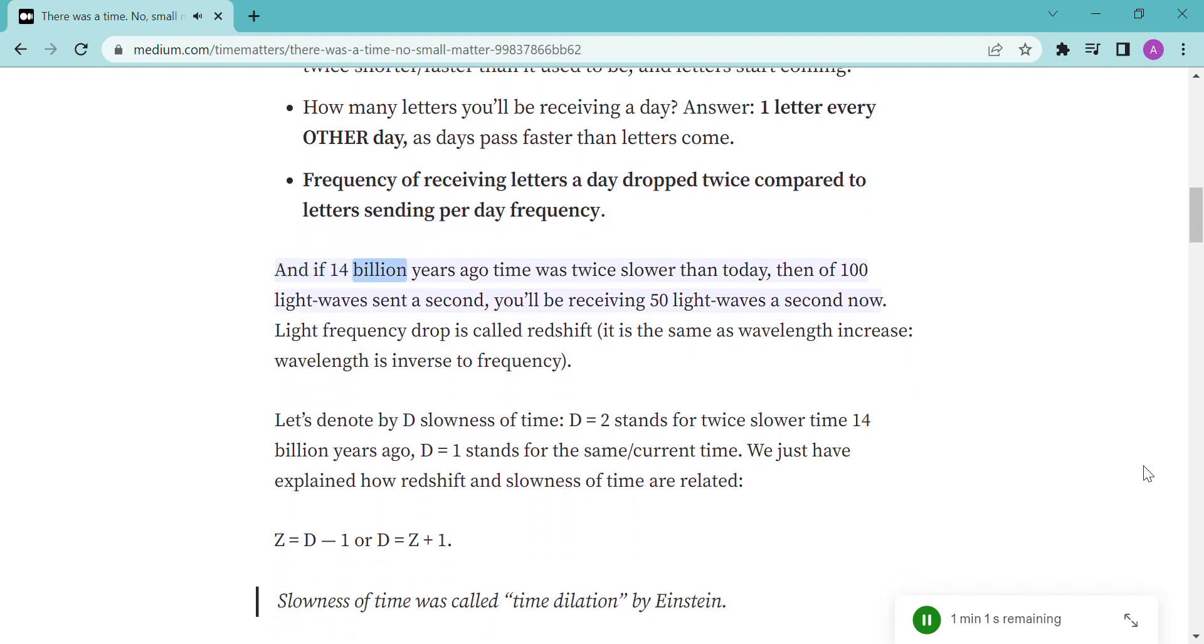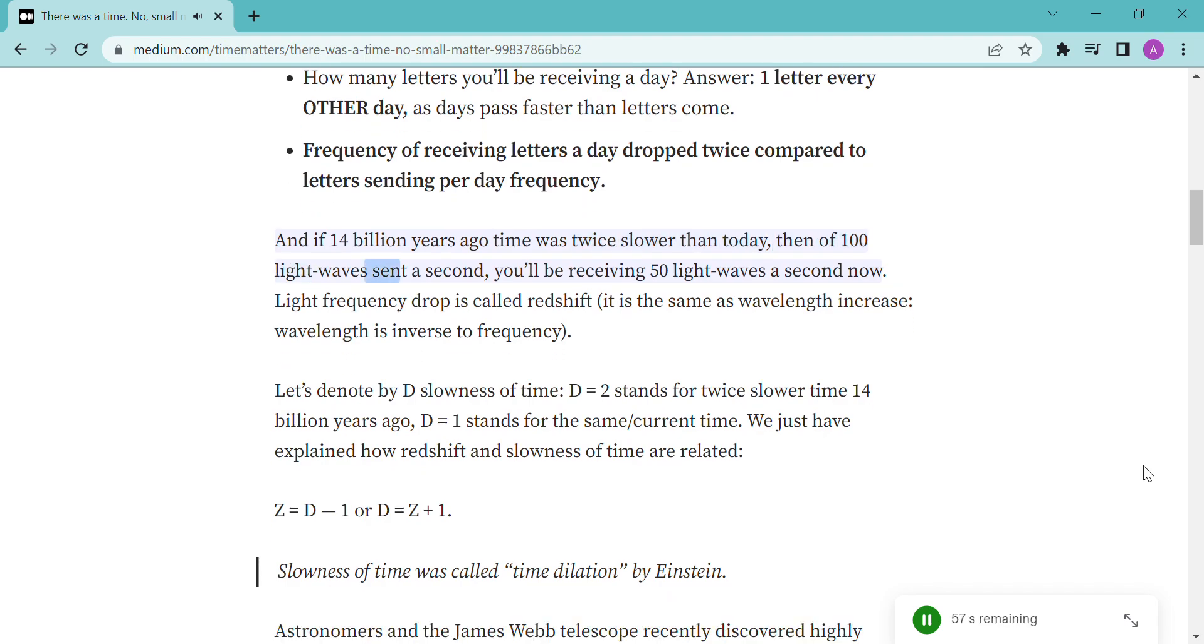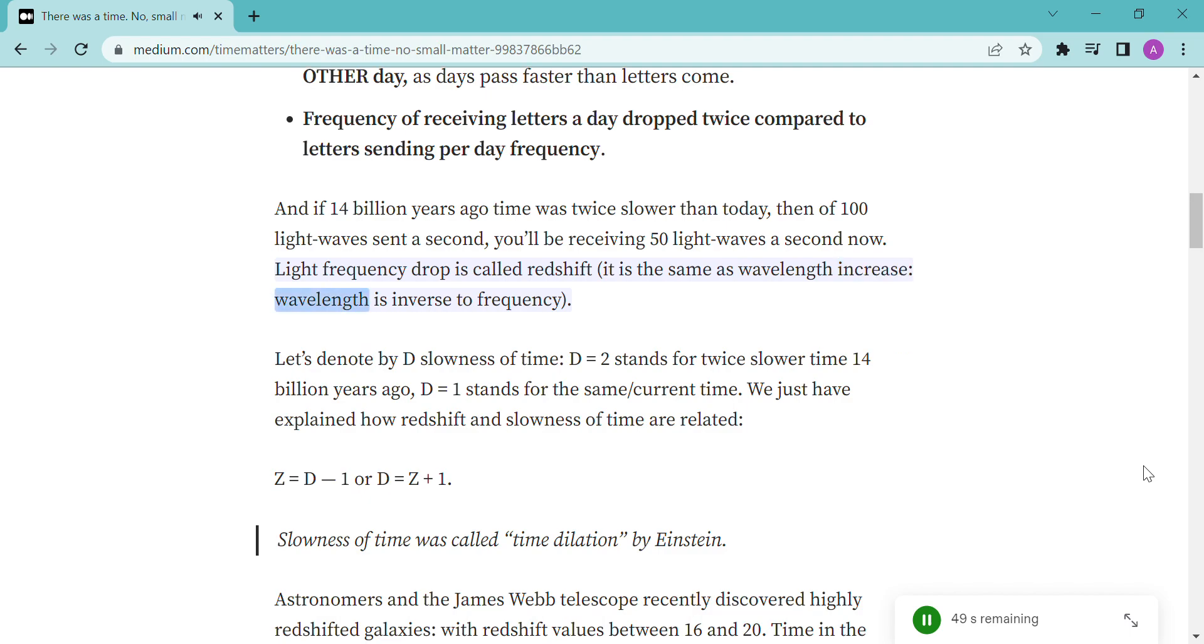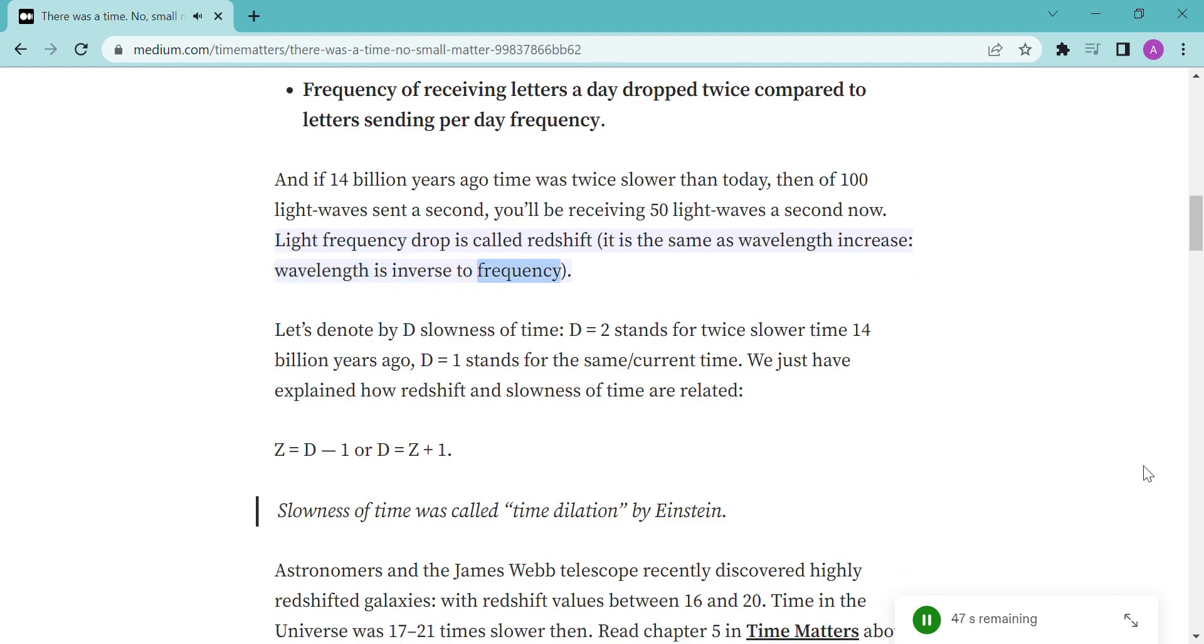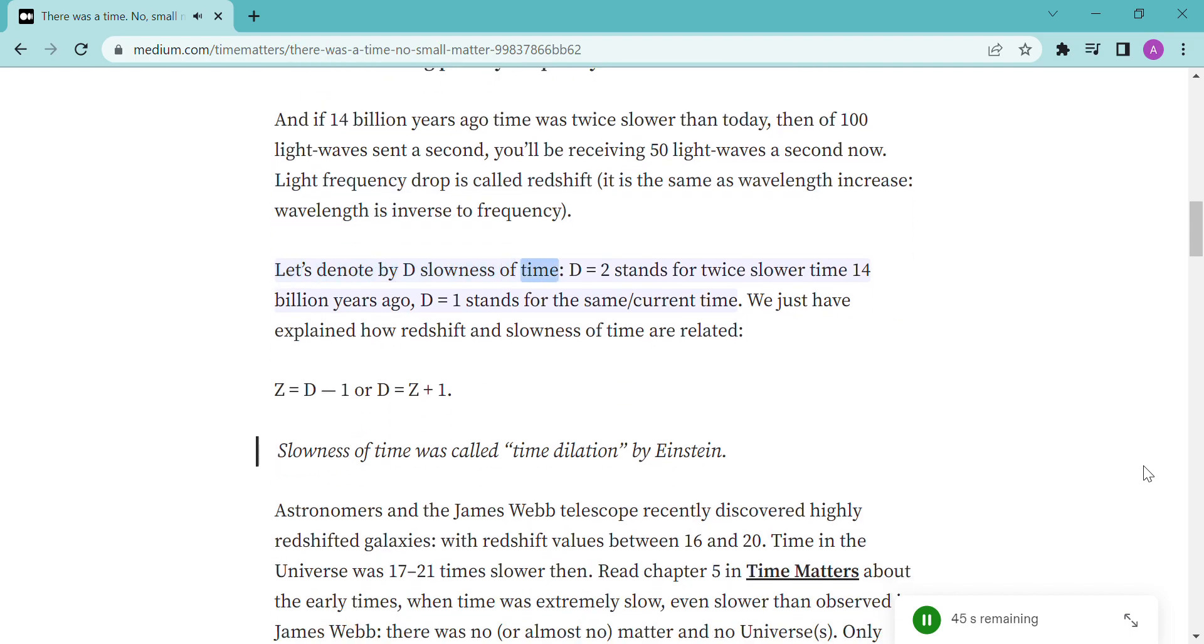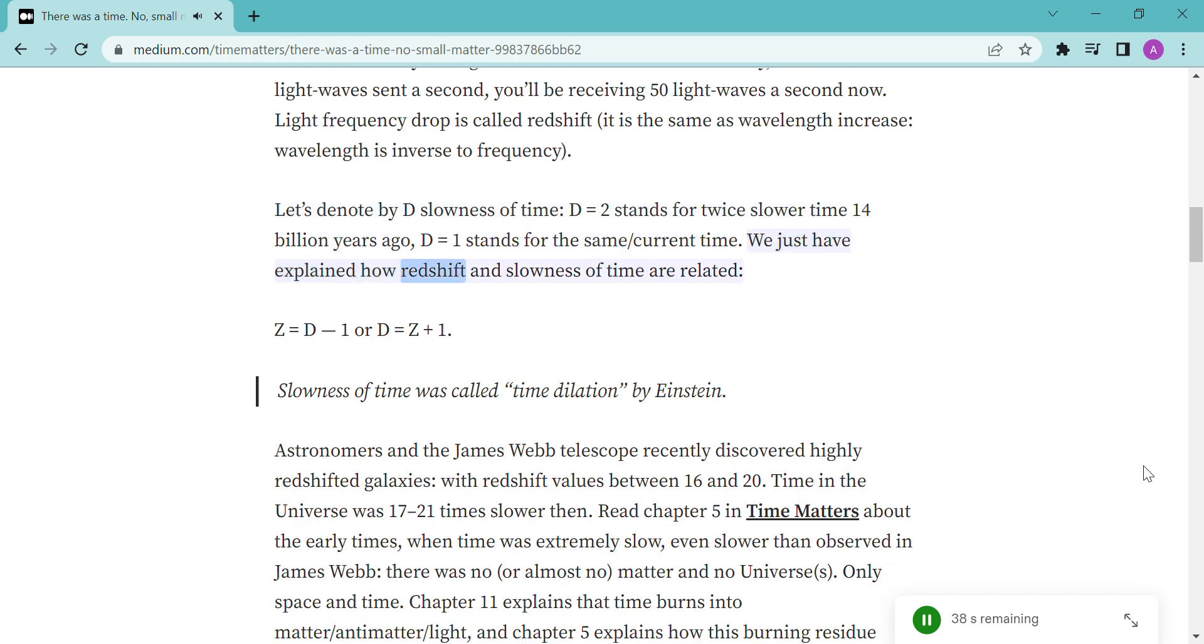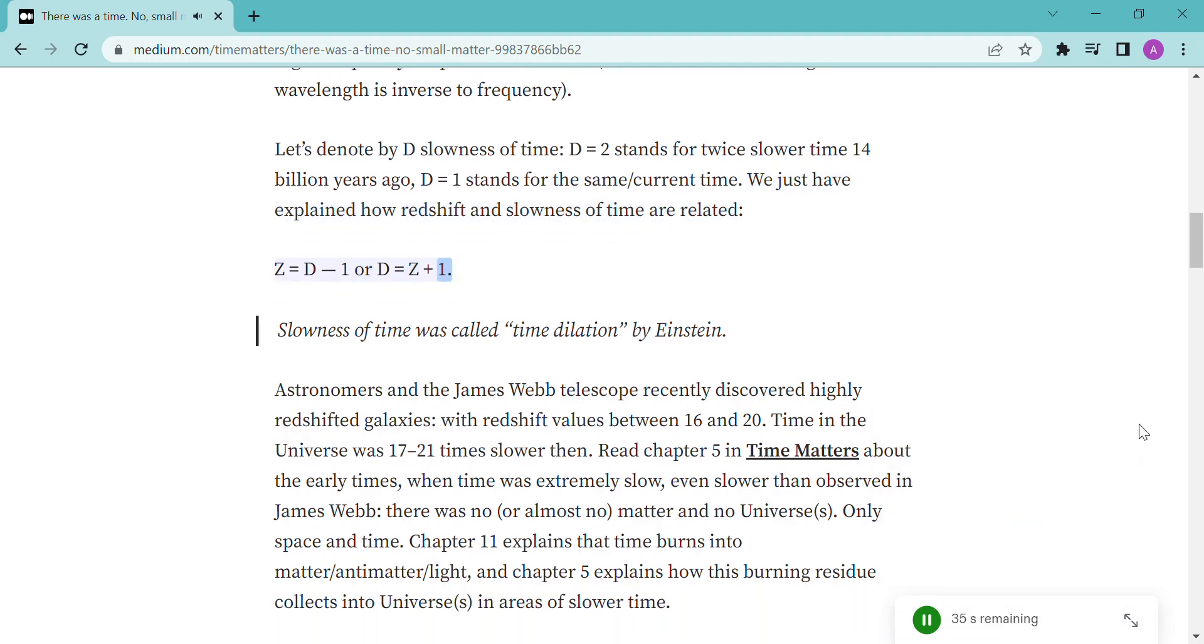And if 14 billion years ago time was twice slower than today, then of 100 light waves sent a second, you'll be receiving 50 light waves a second now. Light frequency drop is called redshift; it is the same as wavelength increase. Wavelength is inverse to frequency. Let's denote by D slowness of time. D equals 2 stands for twice slower time 14 billion years ago. D equals 1 stands for the same, current time. We just have explained how redshift and slowness of time are related. Z equals D minus 1, or D equals Z plus 1.